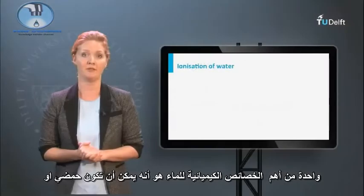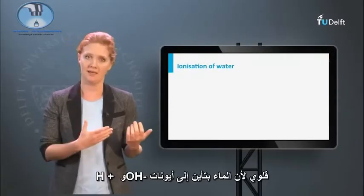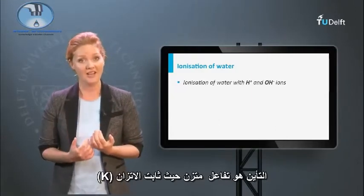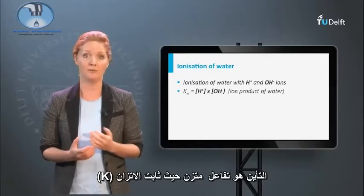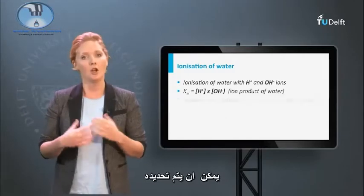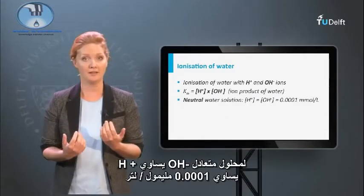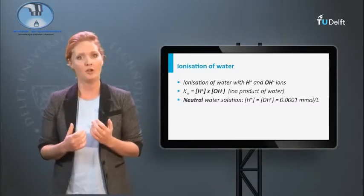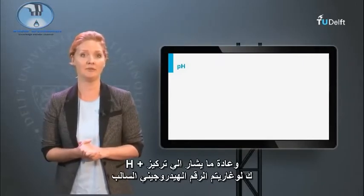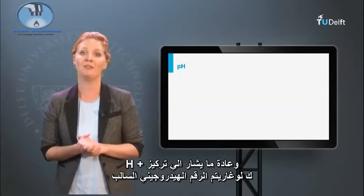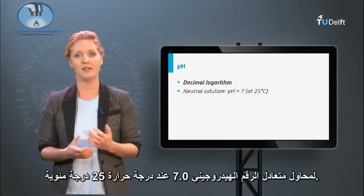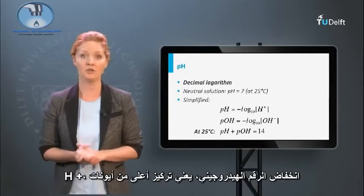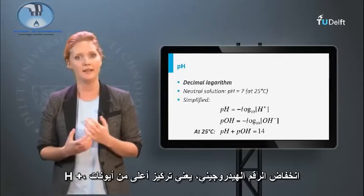One of the most important chemical properties of water is that it can be both an acid and a base, because water ionizes into H⁺ ions and OH⁻ ions. The ionization is an equilibrium reaction for which an equilibrium constant K can be determined. For a neutral solution, H⁺ equals OH⁻ equals 0.0001 millimoles per liter. The concentration of hydrogen ions is usually denoted as the negative logarithm pH. A neutral solution has a pH of 7.0 at a temperature of 25 degrees Celsius. A lower pH, meaning a higher concentration of hydrogen ions, indicates an acid solution.